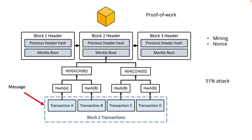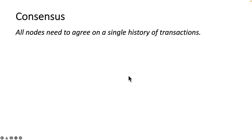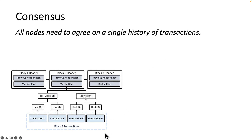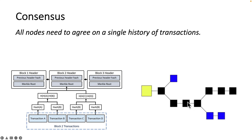In layman's terms, consensus is a group of people agreeing on something. In blockchain, that something is a single history of transactions. In the Byzantine Generals Problem, consensus is when to attack the enemy city. In blockchain, consensus means all nodes agree on a single history of transactions, one state of the blockchain, the rules for changing it, which transactions and blocks are valid, and which chain is the main chain — the longest one being the valid chain for the whole network.